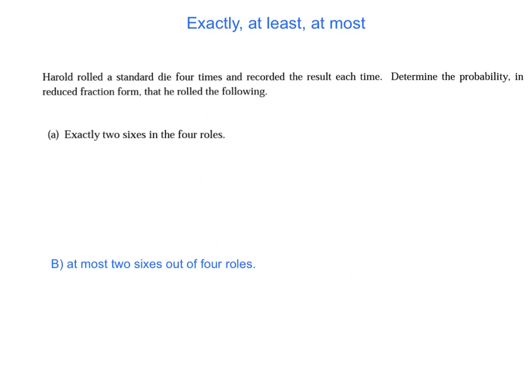All right, and then in probability, we basically have one last question left. It's the exactly, at least, and at most question. And this is probably the most common on our trig exam. So, Harold rolled a standard die four times and recorded the result each time. Determine the probability in reduced fraction form that he rolled the following. So, part A says you want two sixes in four rolls. All right, now I might have gotten a little ahead of myself. Let me slow down and just kind of talk about this formula. The formula is NCR, the probability of a success to the R, and the probability of a failure to the N minus R.